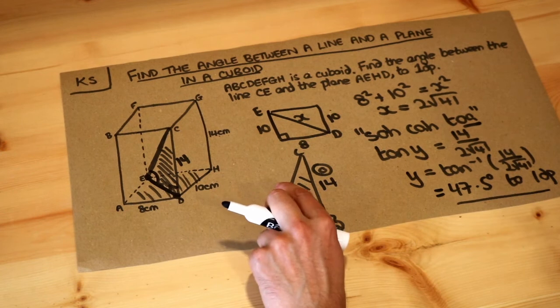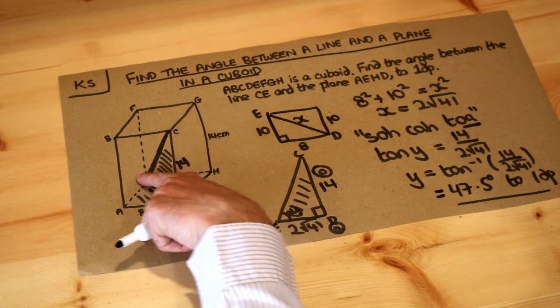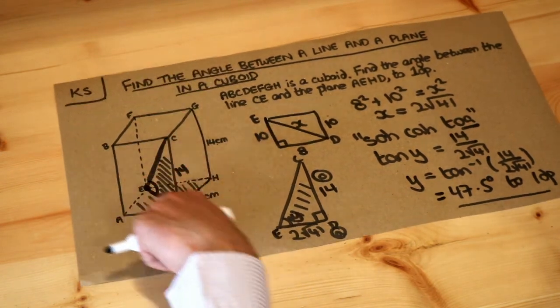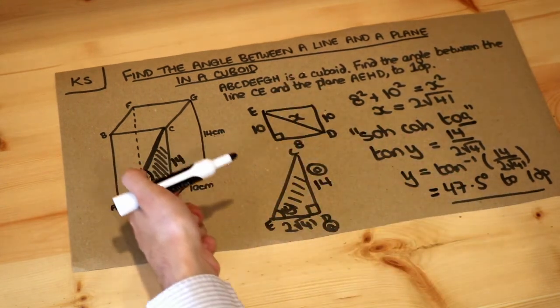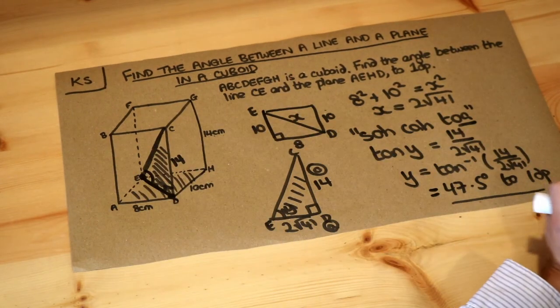So make sure when you start this problem, you identify the line and the dropped line, turn that into a triangle, and then you're going to have to use Pythagoras to find one of the lengths of this triangle first before you then can use SOHCAHTOA.